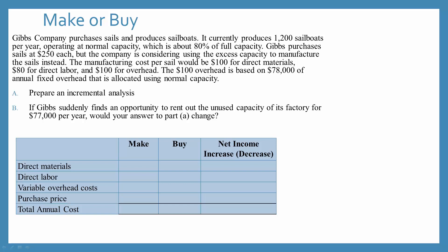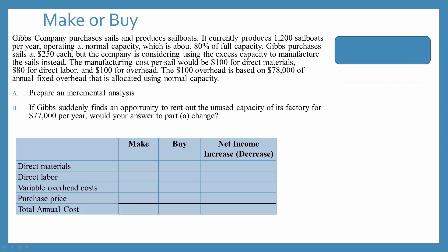First, let's find our direct materials cost. If we look in the paragraph, it tells us that the manufacturing cost per sail would be $100 for direct materials. So if we take that $100 per sail times the 1,200 sails, our total cost to make the sails for direct materials would be $120,000.